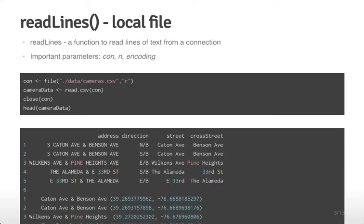In some cases you don't need to use this connection approach because it's almost identical to using one of the standard functions for reading in data. The important parameters for readLines are: con, which is the connection; n, which is the number of lines you'd like to read in; and the encoding, which may matter depending on your application.